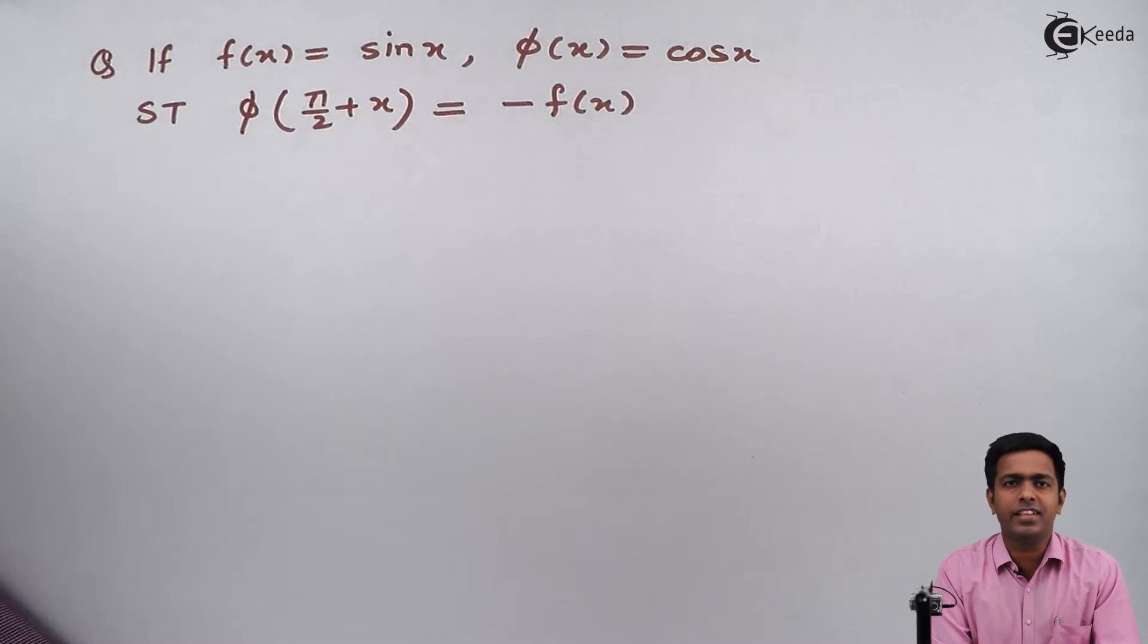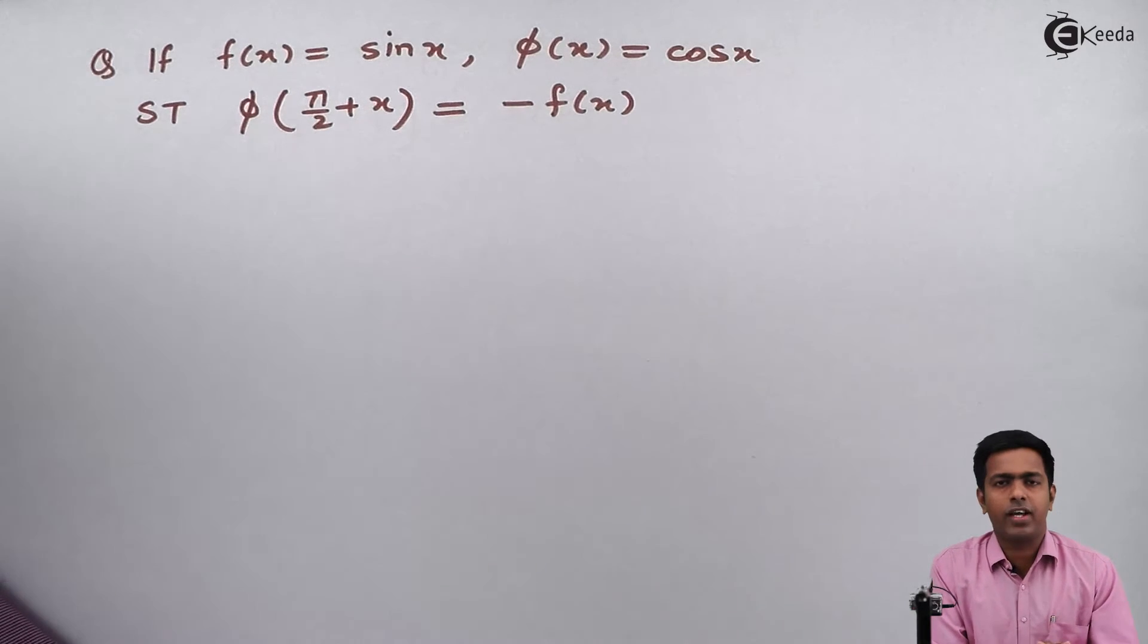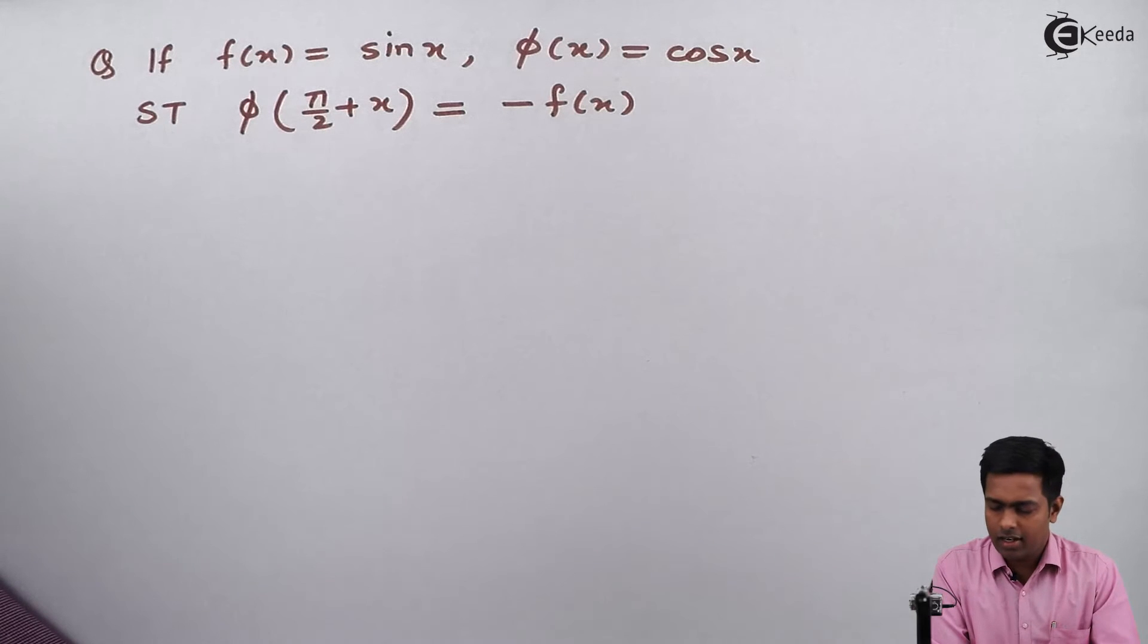Hello everyone. So here in this problem, f(x) is given as sin x and φ(x) is given as cos x, and we have to show that φ(π/2 + x) is equal to -f(x).